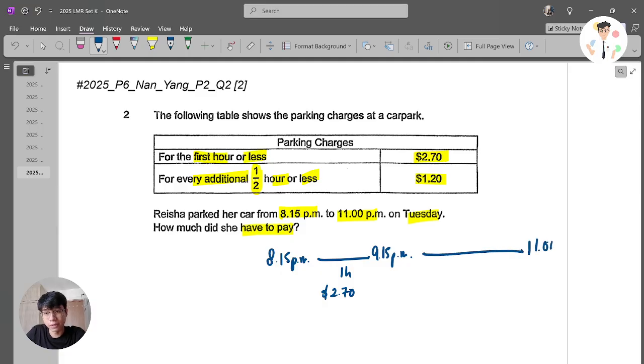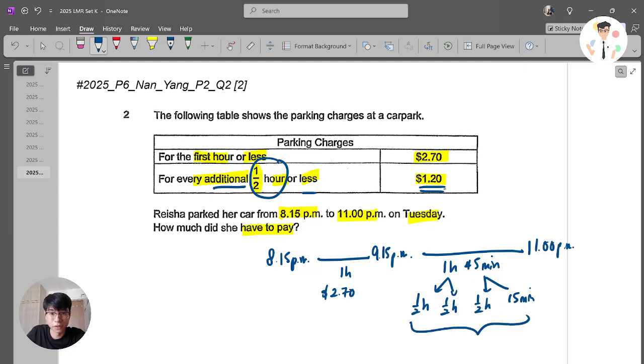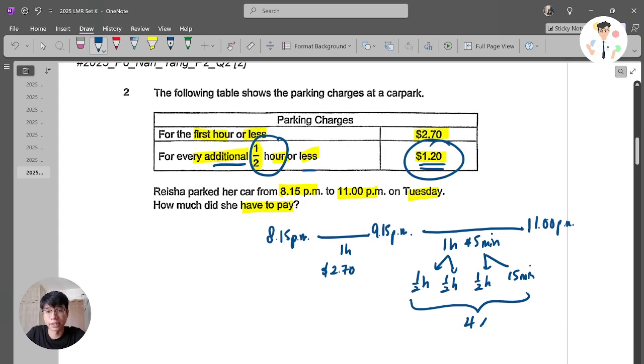So I think we can just try to use a timeline. 8:15 to 9:15 PM will be the first hour, and the first hour you will require to pay $2.70. And 9:15 to 11 PM, if you look carefully, this is actually around 1 hour and 45 minutes. And you know that every additional half an hour or less, you are required to pay $1.20.